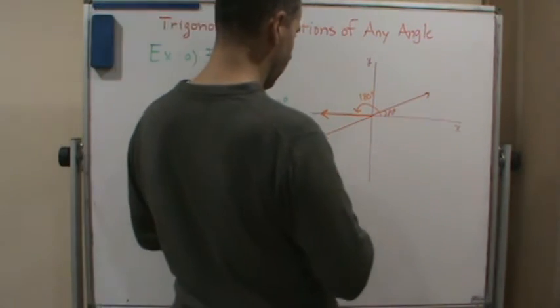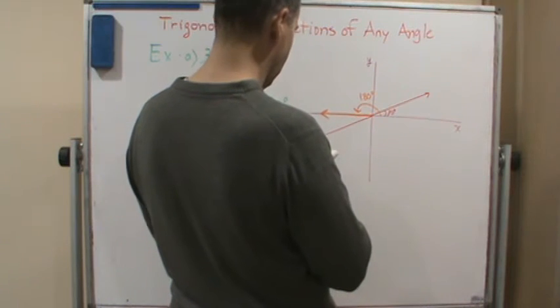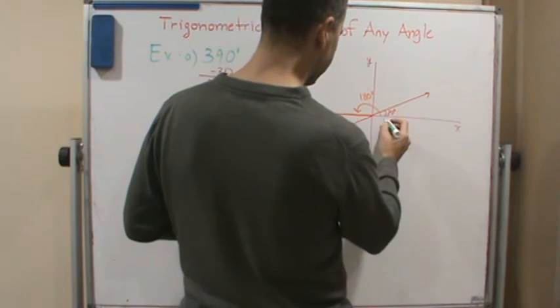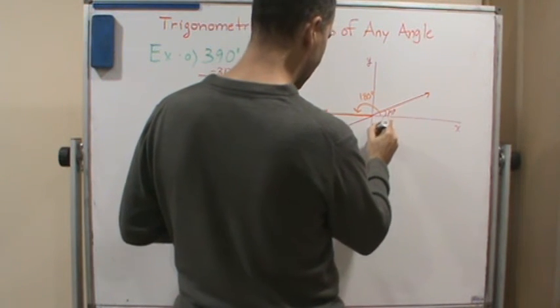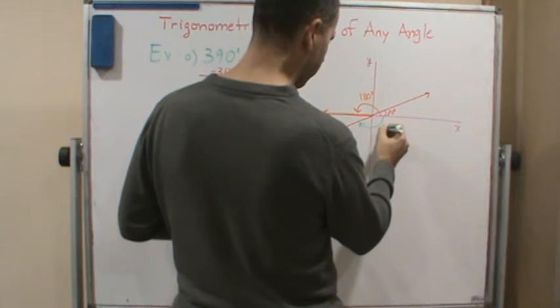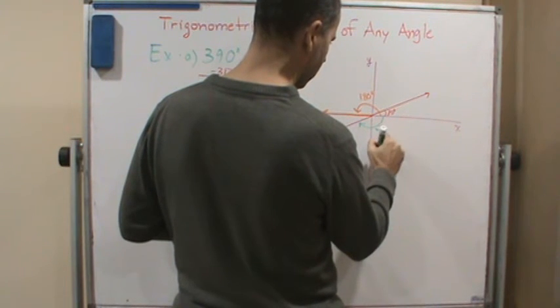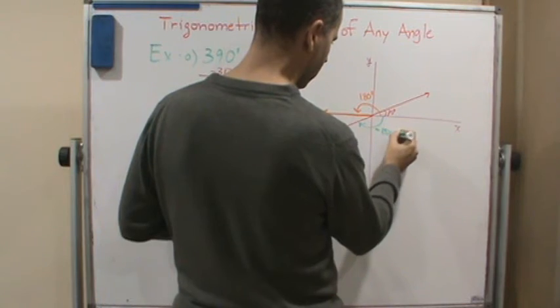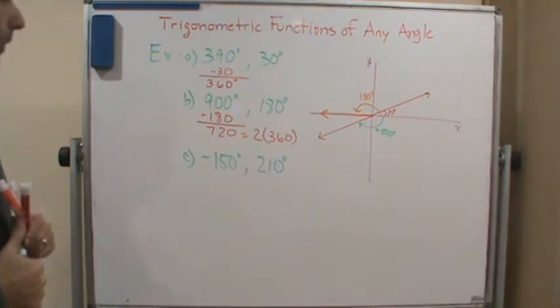Okay, so that means from here, right? So here, clockwise, is negative 150 degrees.